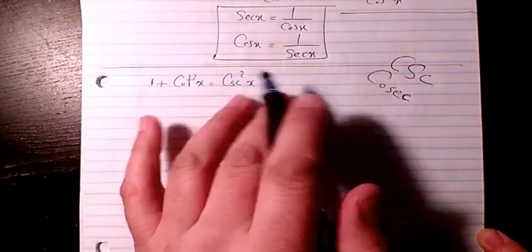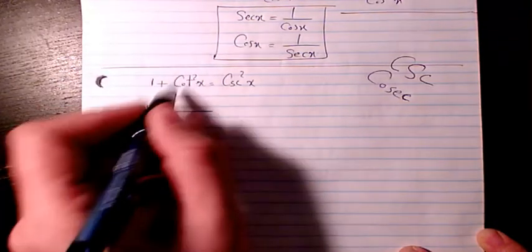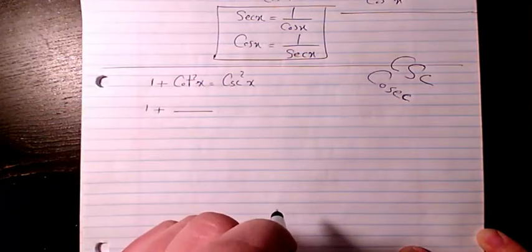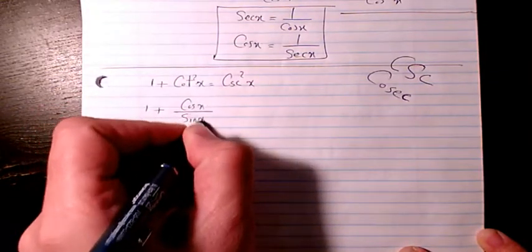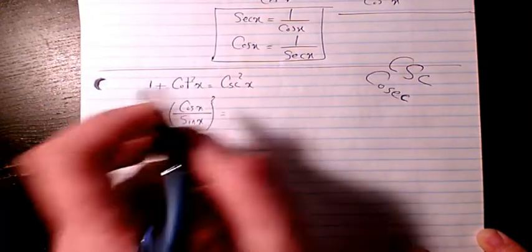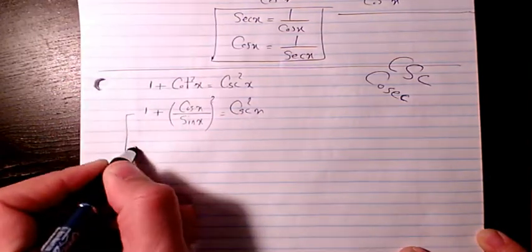this one. Cotangent is the ratio of cosine divided by sine, so it's going to be cosine x divided by sine x, then we have squared here, and it's going to be equal to cosecant squared x. Then from this side I will have 1 plus cosine squared x divided by sine squared x.